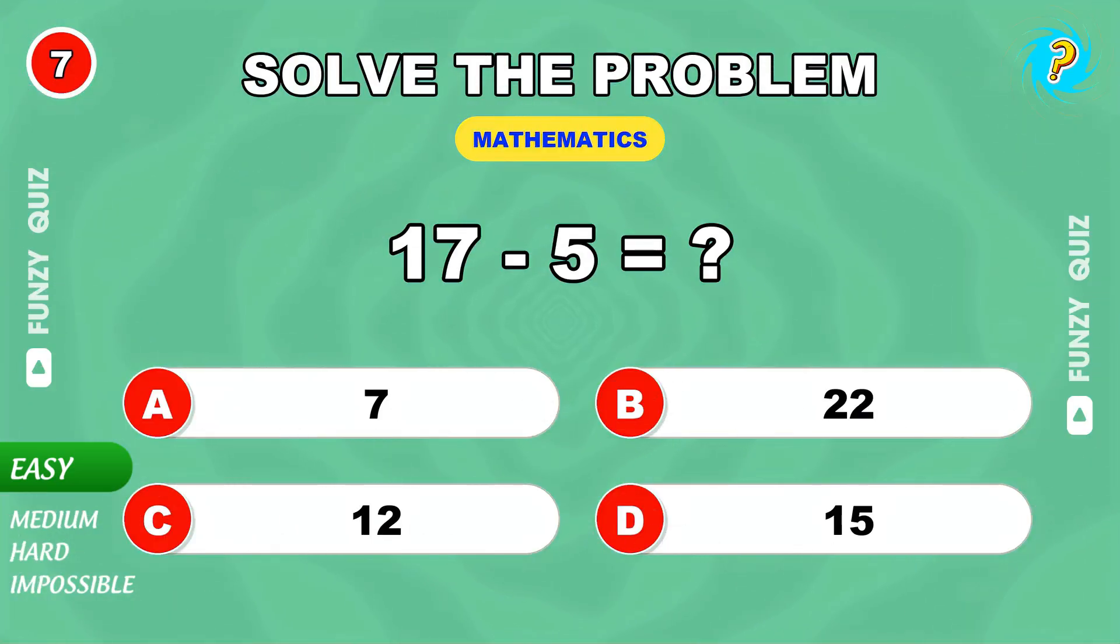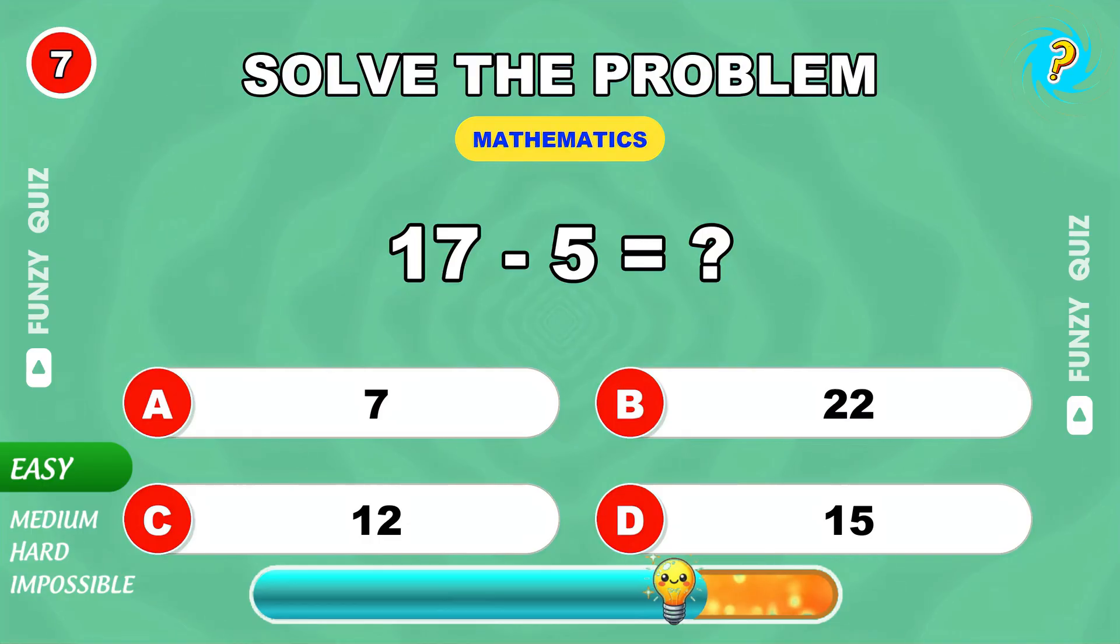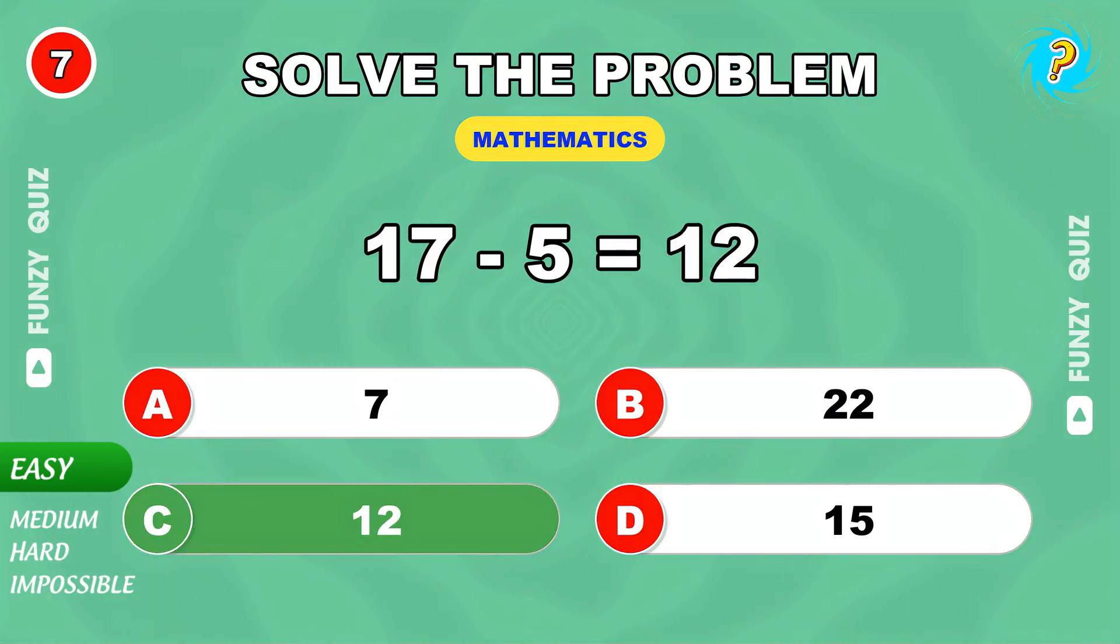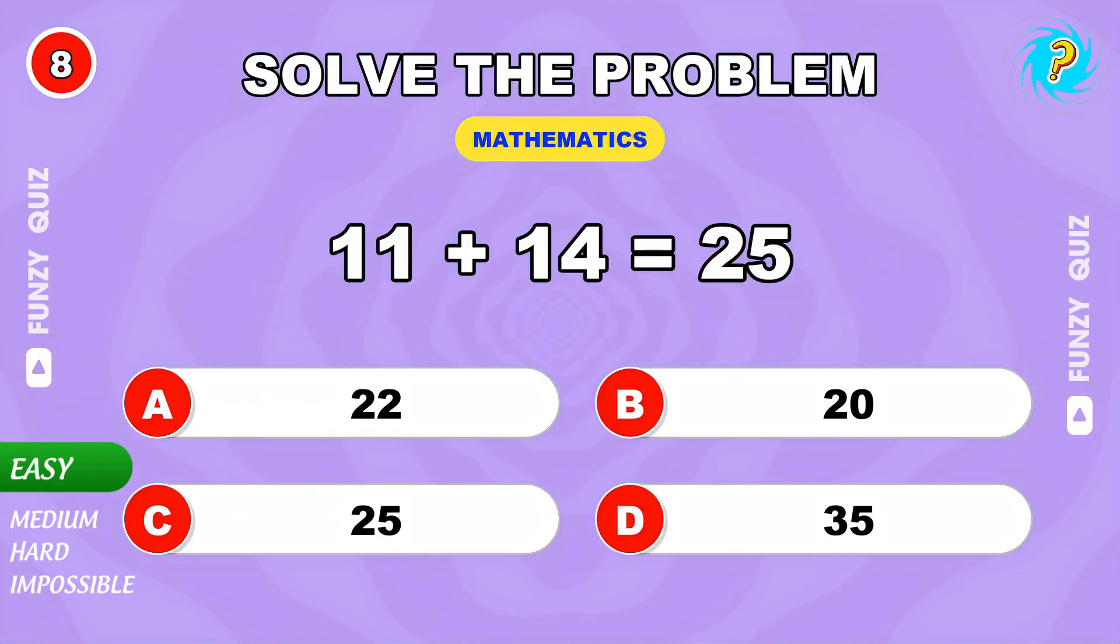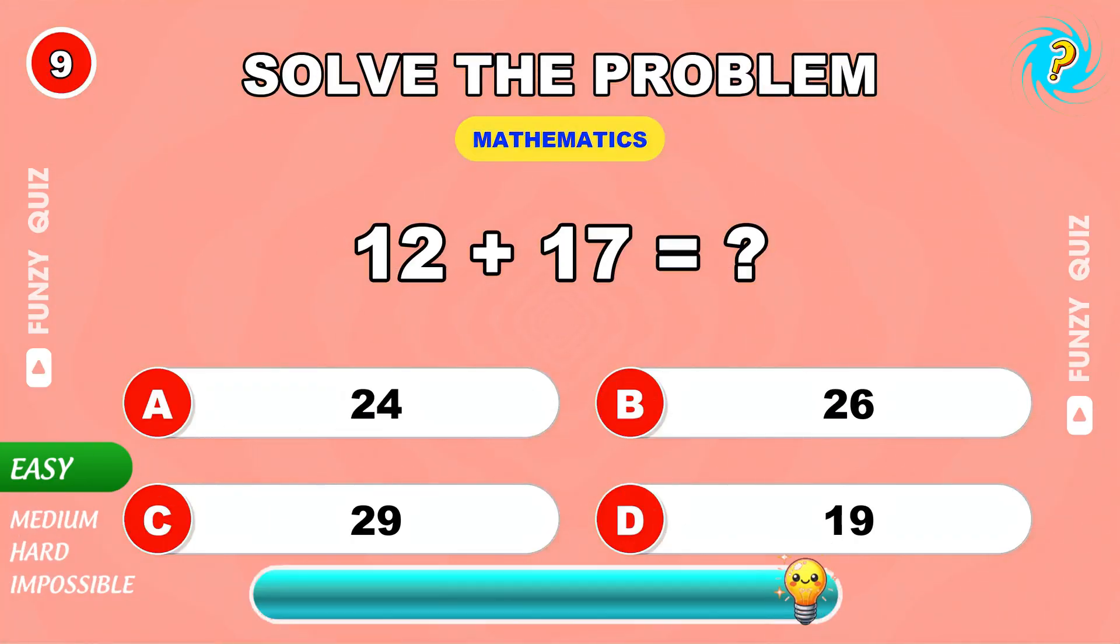17 minus 5. 12, nicely done. Calculate 11 plus 14. 25. Figure out 12 plus 17. 29.